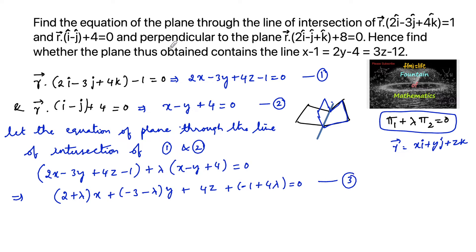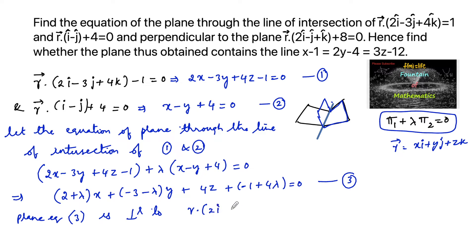This plane is perpendicular to another plane. Plane equation 3 is perpendicular to r dot (2i - j + k) + 8 = 0, which can be written in Cartesian form as 2x - y + z + 8 = 0.